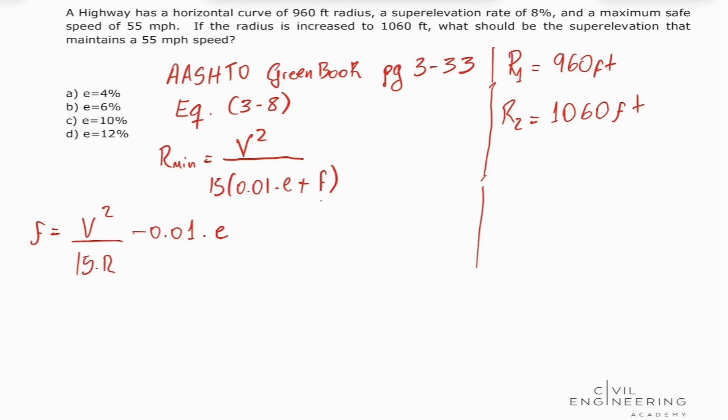So one thing I want to mention: this value is going to be input in percent. Meaning to say that if we got the data a superelevation rate of eight percent, we're going to input eight, not 0.08. So please make a note of that.